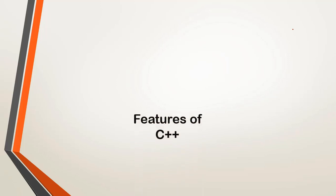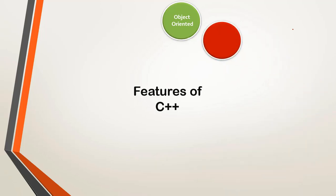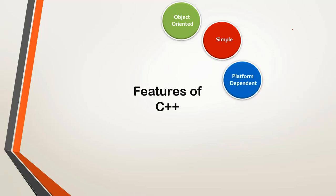Now let's look at the features of C++, a very important topic. The first and most important feature is that C++ is an object oriented programming language, because it follows OOP concepts like abstraction, inheritance, and encapsulation. The second important feature is that it is a very simple language, because C++ is a structured programming language in which the program is broken down into small modules that are easy to understand.